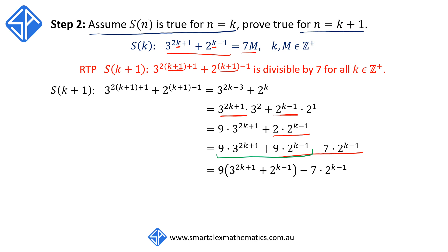So that we can now factorize the 9 from the first two terms as follows. We now have 9 times 3 to the 2k plus 1 plus 2 to the k minus 1 and again minus 7 times 2 to the k minus 1. But what do we notice? Well, this 3 to the 2k plus 1 plus 2 to the k minus 1 is essentially our S(k) statement, which we have made the assumption that it is divisible by M. So we can replace this with 7M.